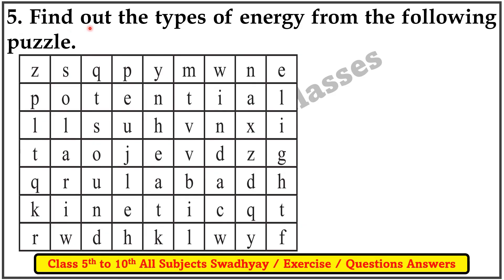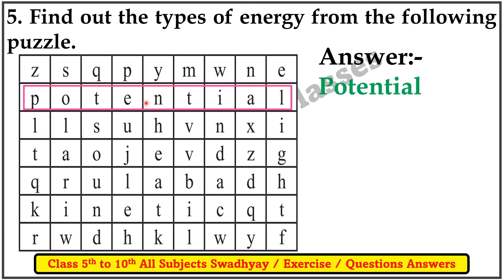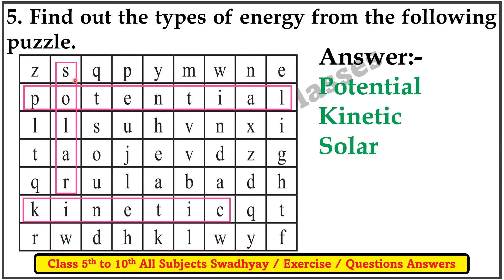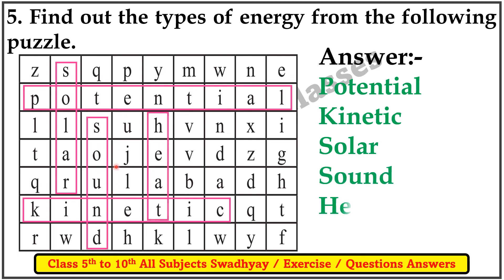Number 5: find out the types of energy from the following puzzle. Answer: 1. Potential, 2. Kinetic, 3. Solar, 4. Sound, 5. Heat, 6. Wind.